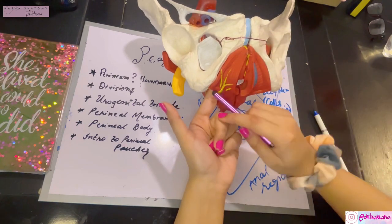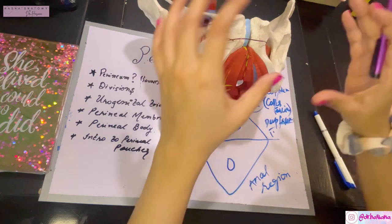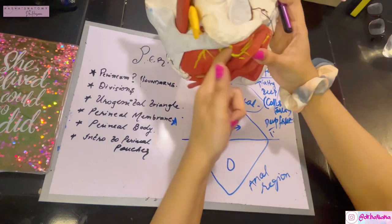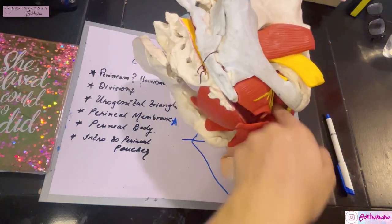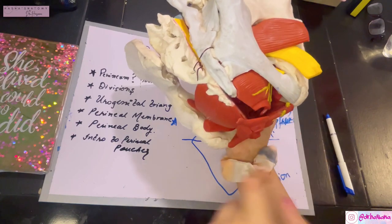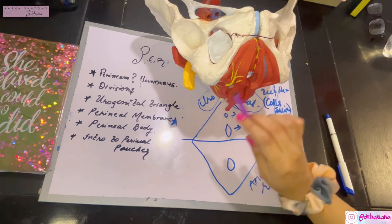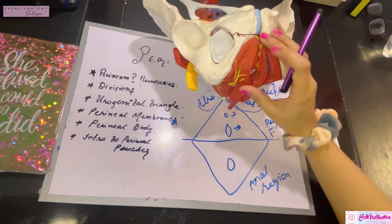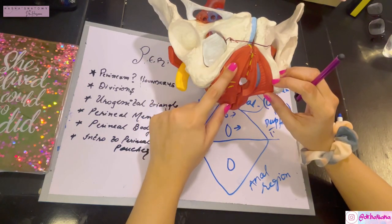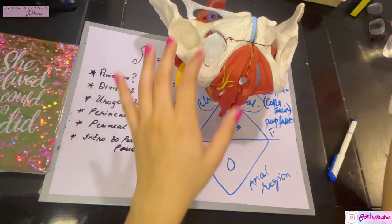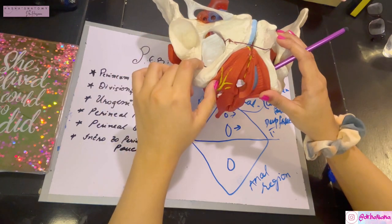The importance of the perineal membrane is that it divides the urogenital triangle into a superficial part and a deep part. The part superficial to the perineal membrane is the superficial perineal pouch, and the deep part is the deep perineal pouch. These two pouches will be discussed in the next video. That was all for today — I hope you understood the perineal area well. Stay tuned, join me in the next video, and thank you for watching.